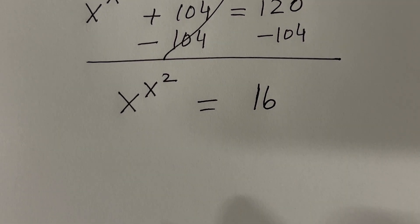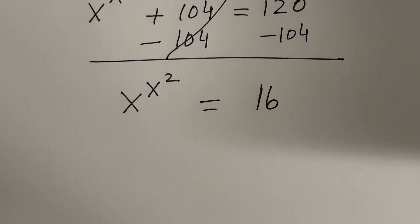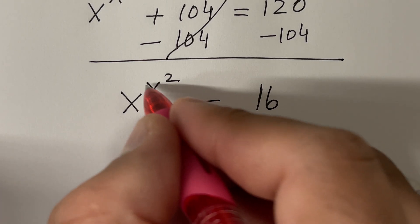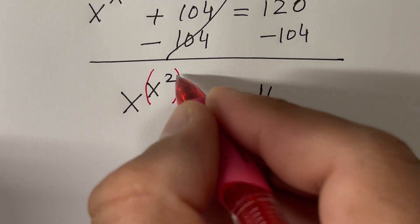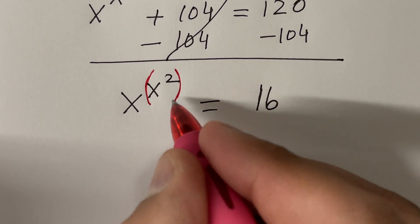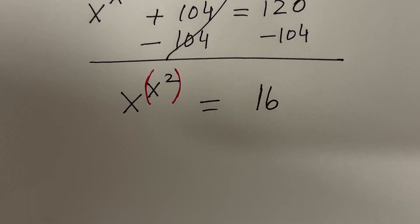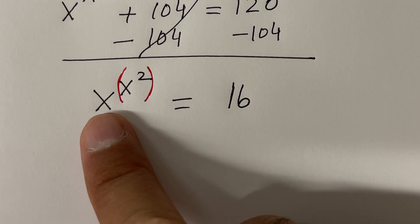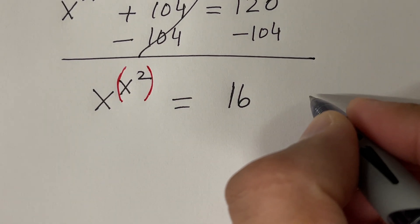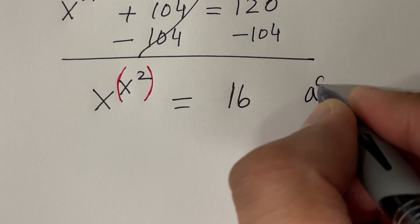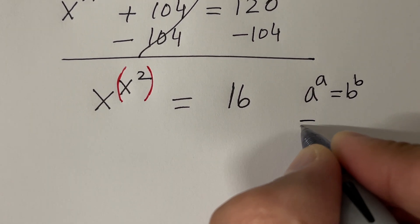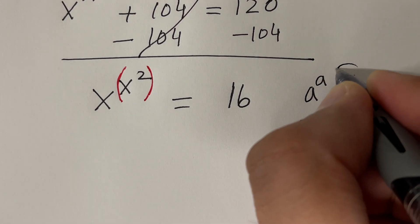But the issue is, how can we solve this equation? This is a power tower on the left hand side. Power tower means you have parenthesis — whatever the exponent is, that is one power of this base. And whenever you have power towers like this, I would suggest using the property that says: a raised to the power a equals b raised to the power b implies that a equals b.